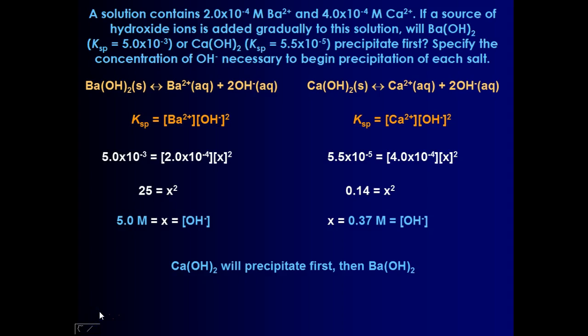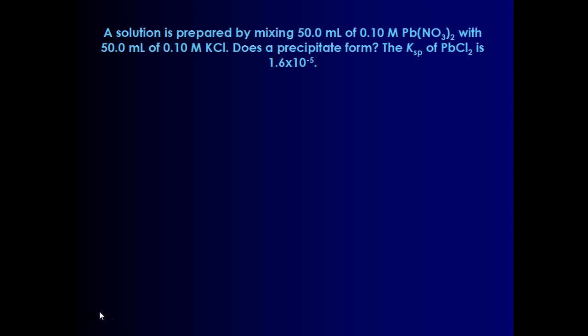This is going to be our last example. I will caution you. Now I have two students plus Ms. Henshaw in here, so if you hear random stuff, I apologize now. This time we're taking 50 mL of 0.1 molar lead 2 nitrate, and we're mixing it with 50 mL of 0.1 molar potassium chloride. And we want to know if a precipitate forms.